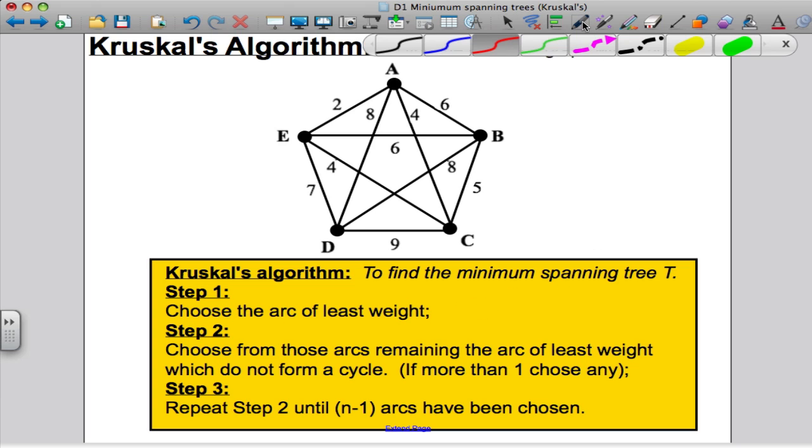So you look at all your possible arcs. You've got 2, 7, 4, 8, 6, 4, 6, 9, 8, 5. Choose the minimum one. That's two. Step two. And it says, choose that arc. So what I'm going to do is I'm going to highlight it in. I've chosen that arc.